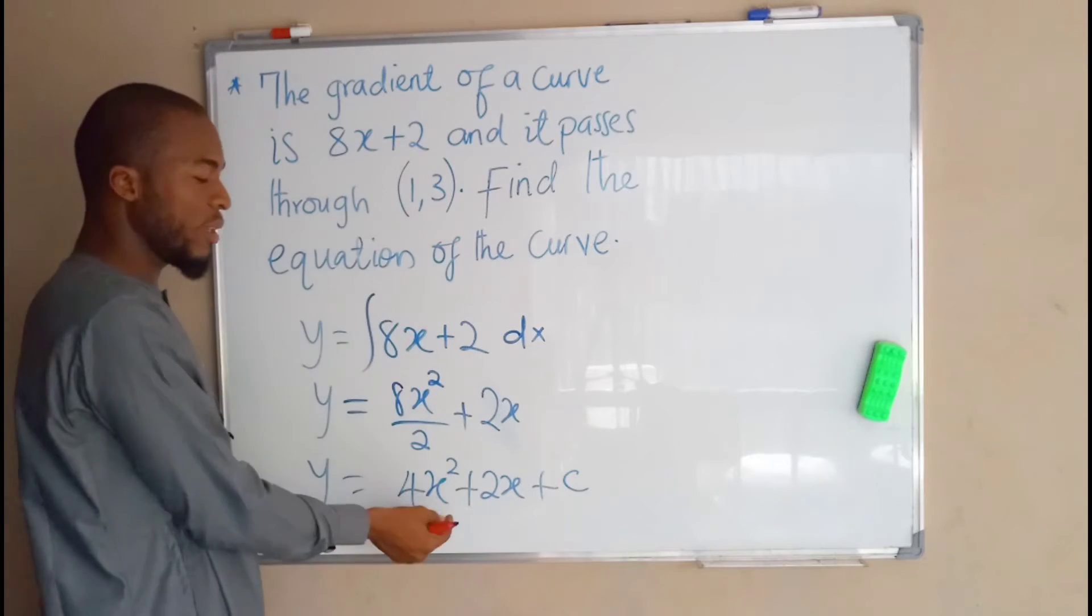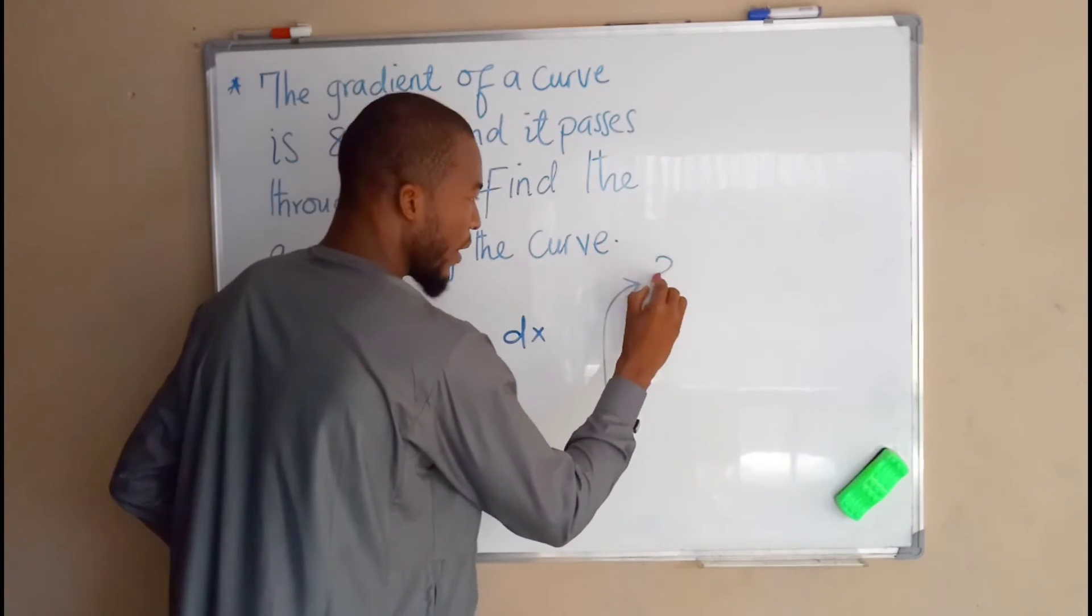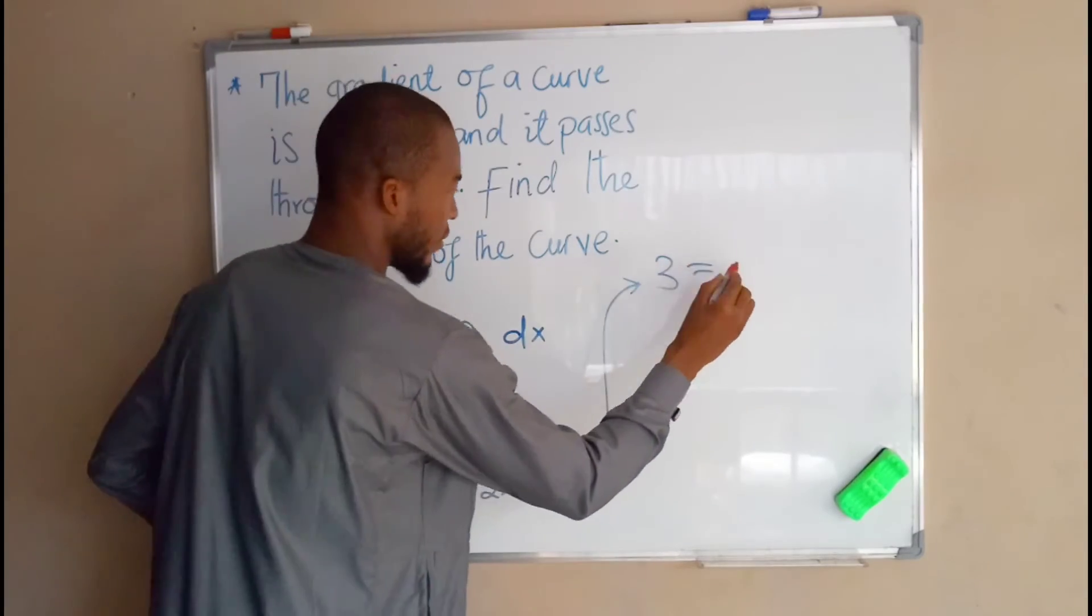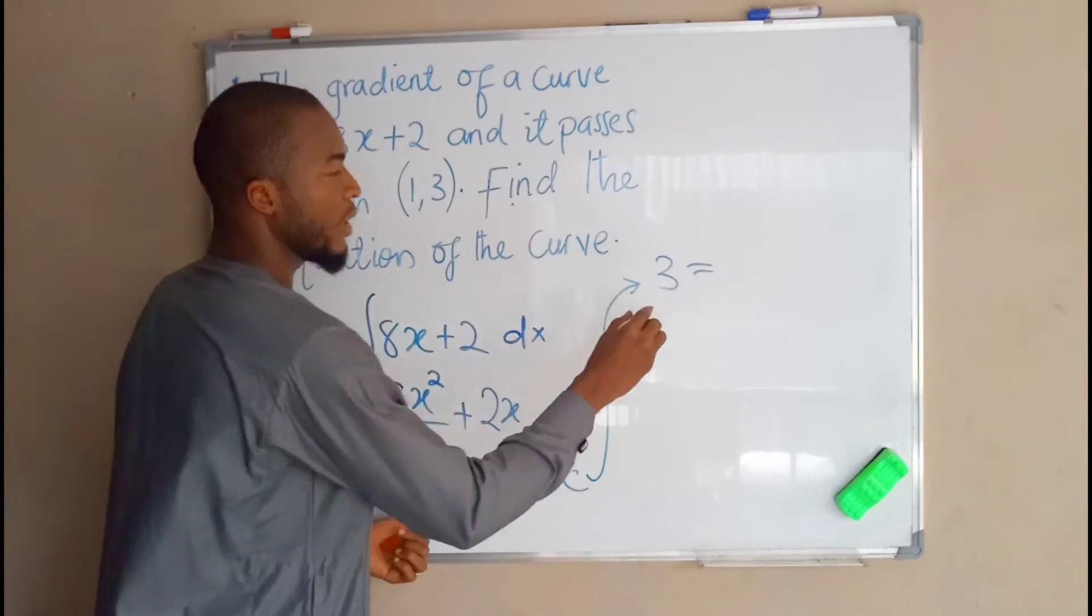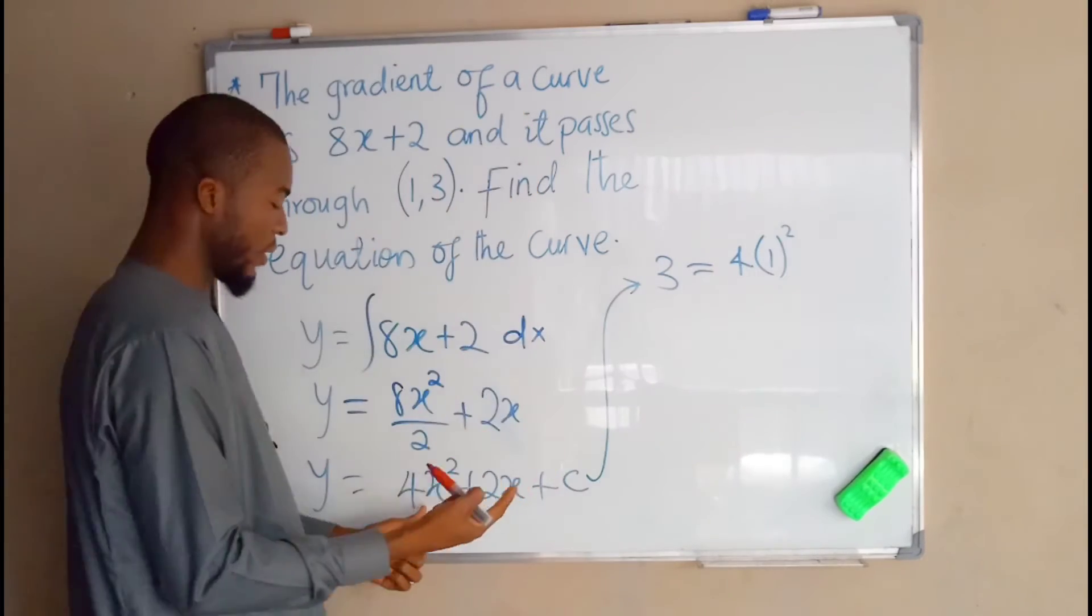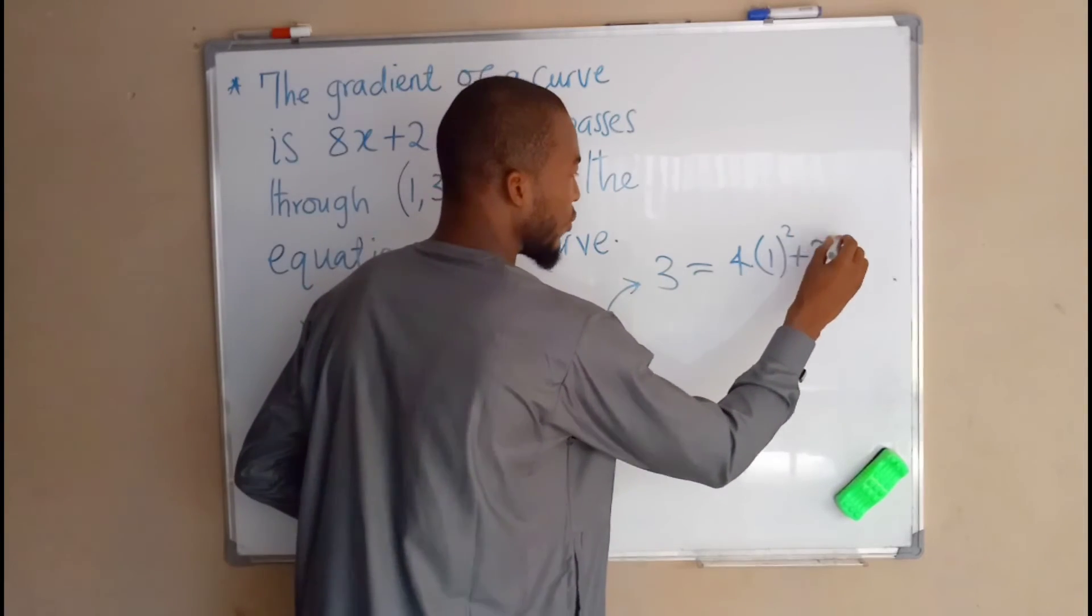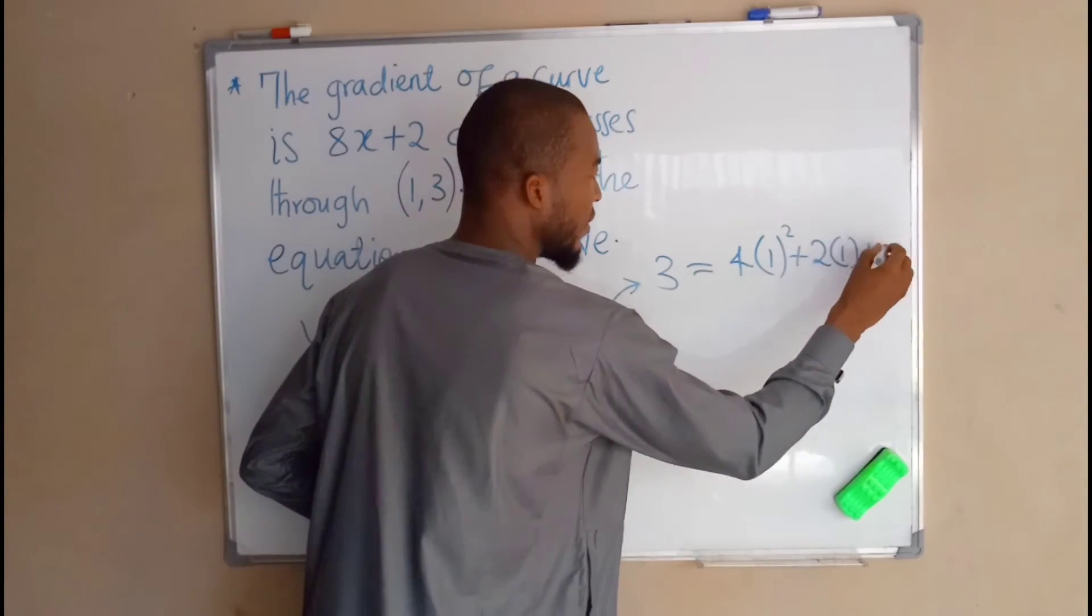So we are going to substitute this point into the main equation. From here, y equals to 3 equals 4 times 1 to the power of 2, because x is equal to 1, plus 2 times 1 plus c, which is constant.